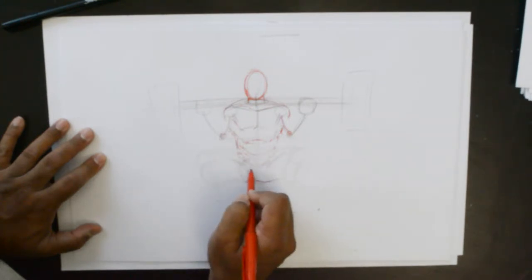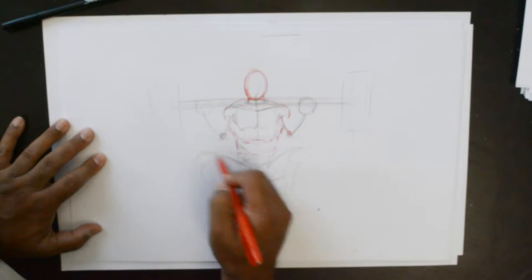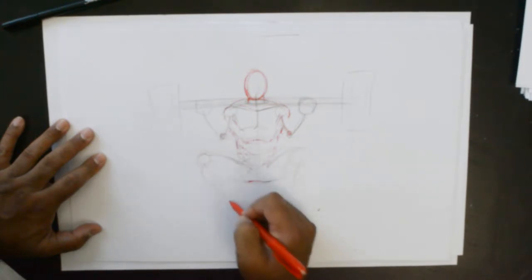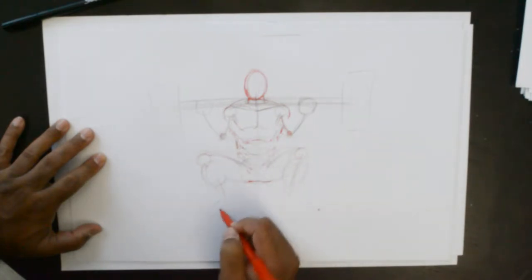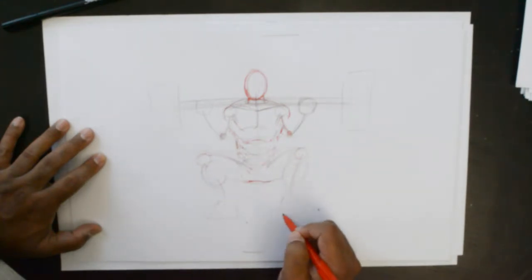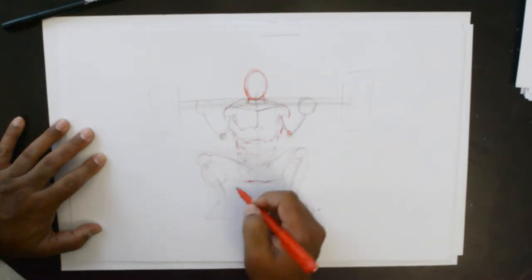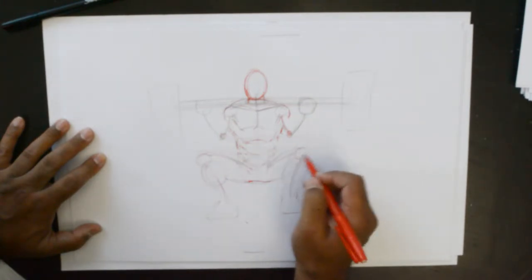And then of course we have the legs here. So some foreshortening, not a lot going on there, but some foreshortening to accommodate for that front angle. And then of course we have the feet, the shin, the calf to round this up.